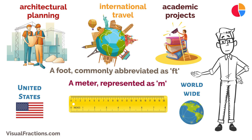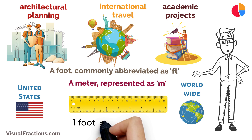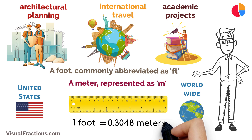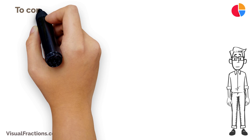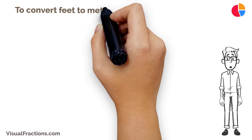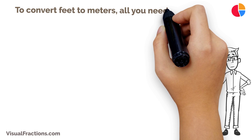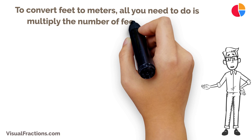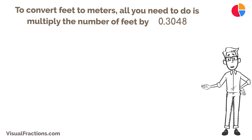Here's the crucial part: one foot is equal to 0.3048 meters. To convert feet to meters, all you need to do is multiply the number of feet by 0.3048.